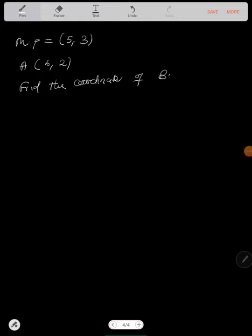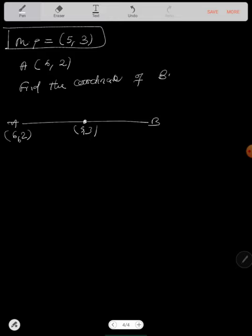Now, let's say you've been given the midpoint and the coordinates of one point, and you've been asked to find the coordinates of B. So you have this line, line AB, whose midpoint has been given to be 5 comma 3. You've also been given 6 comma 2, and you've been asked to find this point.